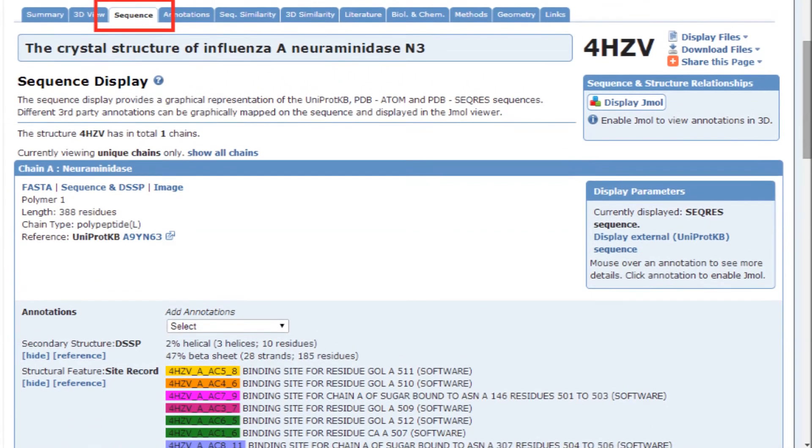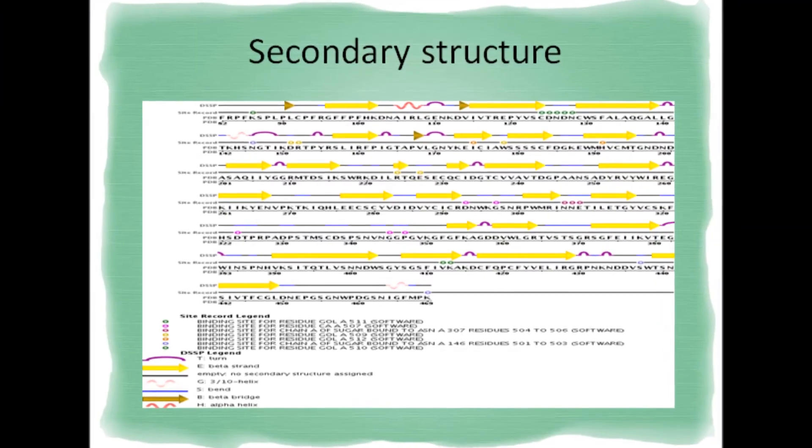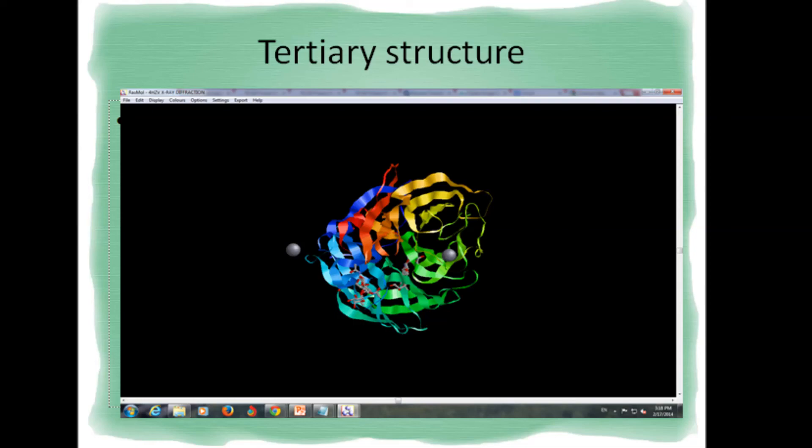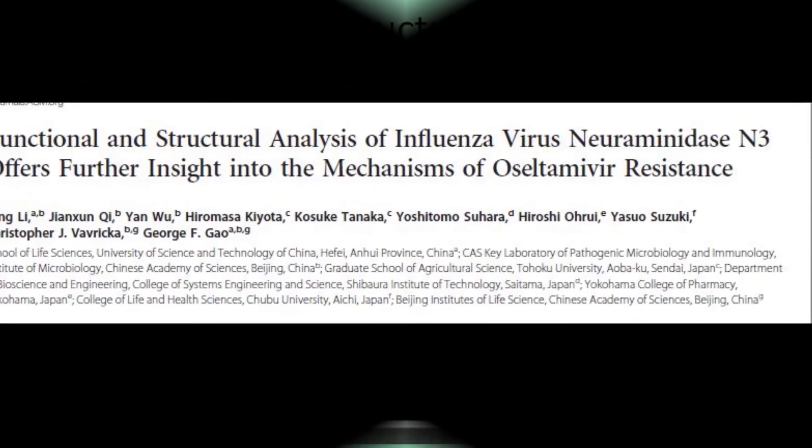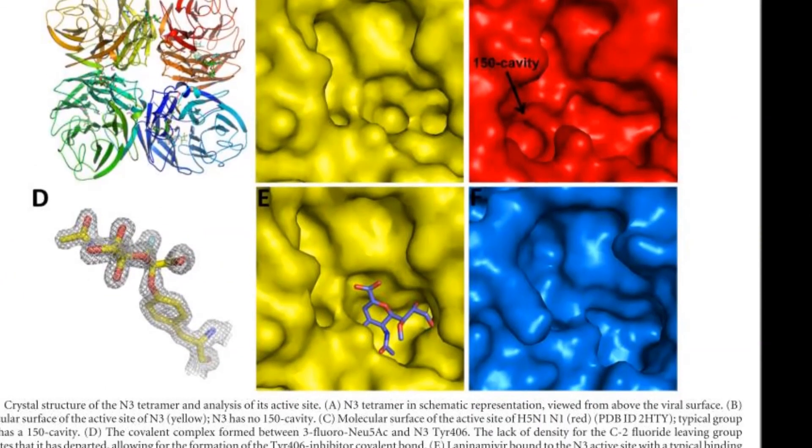Now the secondary and tertiary sequence can be found from the neuraminidase page in the protein data bank website we had searched earlier. This neuraminidase selected here is part of a study done from a journal written by the following.